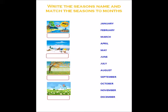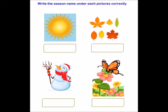The next one is 'Write the season names and match the seasons to the months.' On the left side I have given the four seasons pictures, so the child has to write what season each picture represents, and then match the months in which the seasons occur.